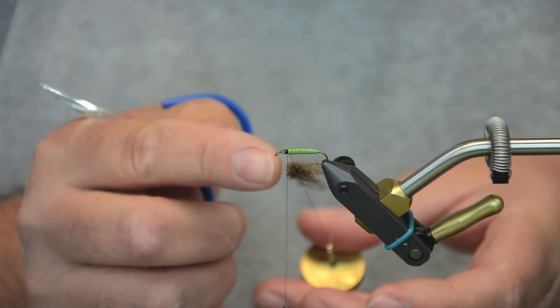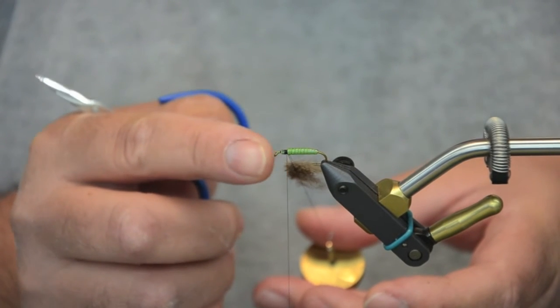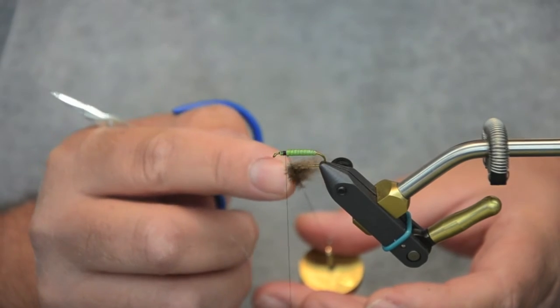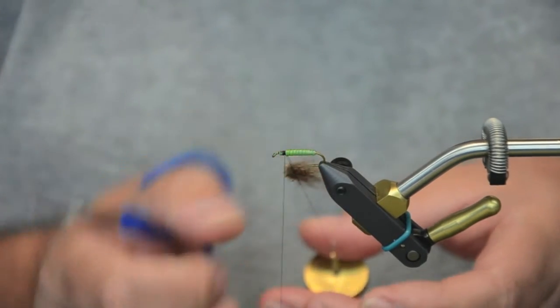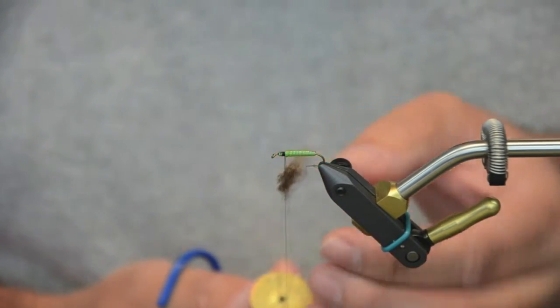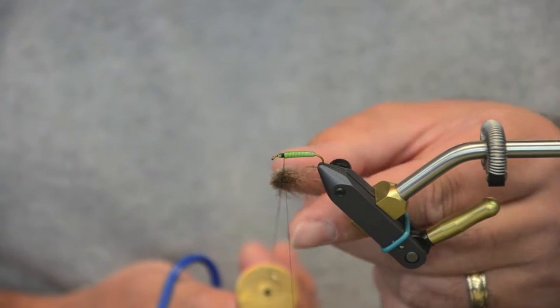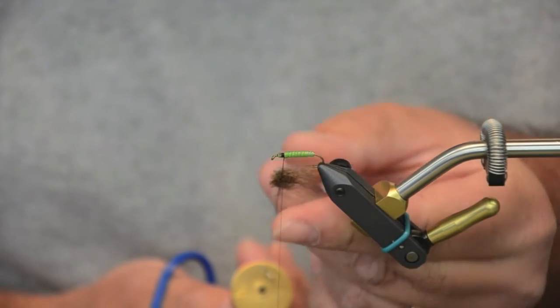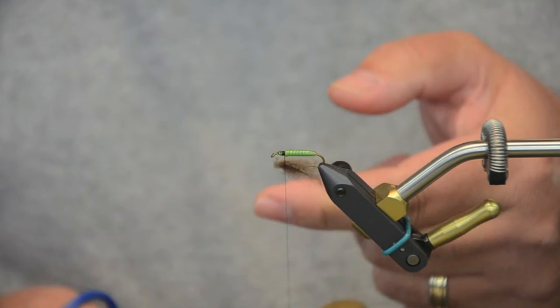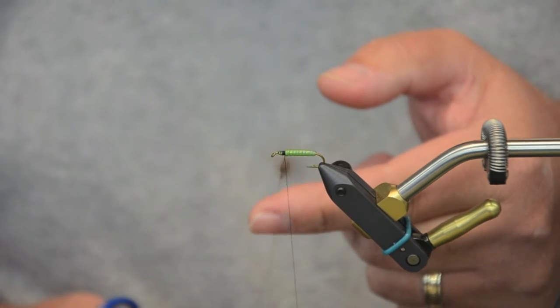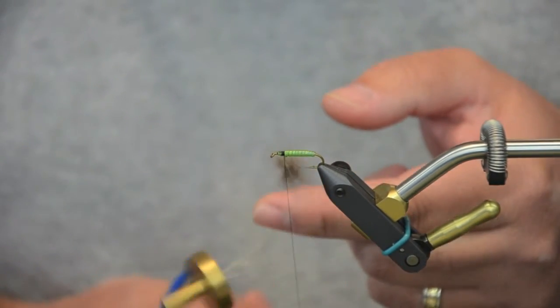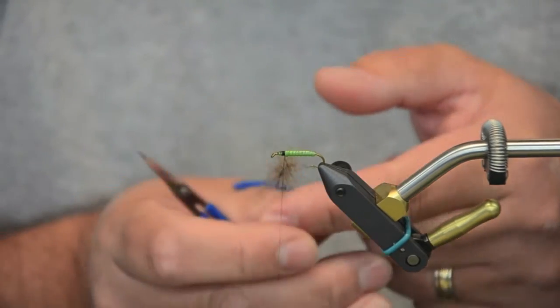And I'll adjust it a little bit here. You can do that. And then I will spin my tool. It will make my thorax for this fly. Okay.